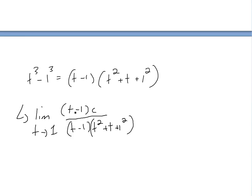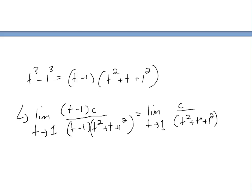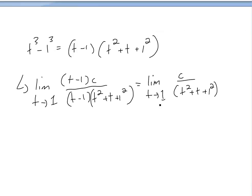When you plug in t = 1, you'd get 0 over 0, which is undefined. So the (t - 1) terms cancel, and we're left with the limit as t approaches 1 of c over (t² + t + 1). Now we can just plug in t = 1: that gives us c over (1 + 1 + 1), which is c over 3. So c/3 is our limit.